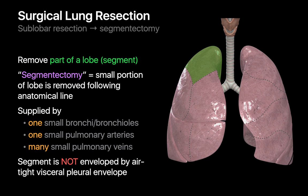In sublobar resections, part of a single lobe is removed. Sublobar resections where a segment is removed along an anatomic boundary are called segmentectomies. Resecting a segment is different than resecting a lobe or entire lung — it's not like plucking a tomato off a stem. Although a segment is supplied by only one airway and one pulmonary artery, it may be drained by many small pulmonary veins and is not encased within a visceral pleural envelope independent from the other segments, so incising it creates massive air leaks and bleeding from transected pulmonary veins.